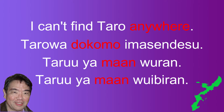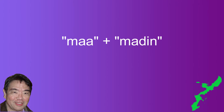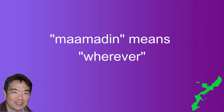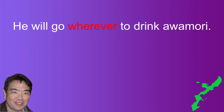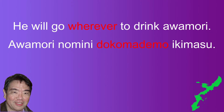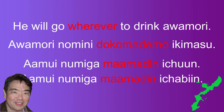The next example is "ma" used with the sentence particle "madin," which we covered in video 44. "Ma madin" means "wherever," equivalent to Japanese "doko mademo." The example is "he will go wherever to drink aomori." In Uchinaguchi: "amui numi ga ma madin ichabin" in casual form, and "amui numi ga ma madin ichabin" in polite form.